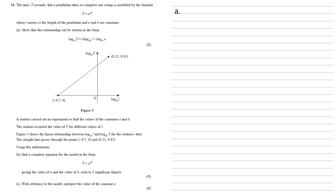For part a, we need to show that this relationship can be written in the form log base 10 t equals b times log base 10 l plus log base 10 a.